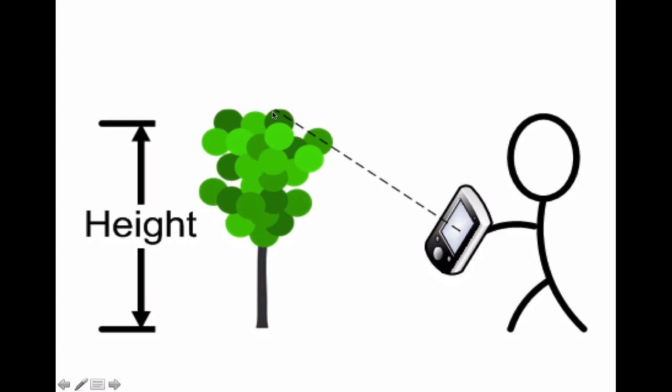As soon as you do this and hit the button on the screen, it will give you two things: the distance between yourself and the object, and the height of it. And that's it.